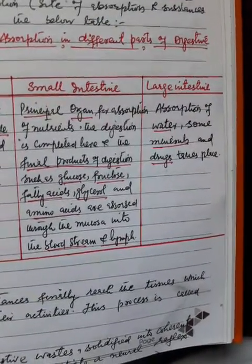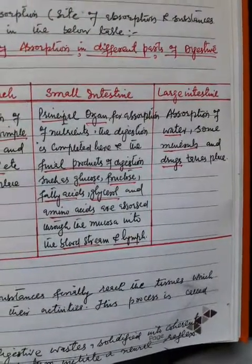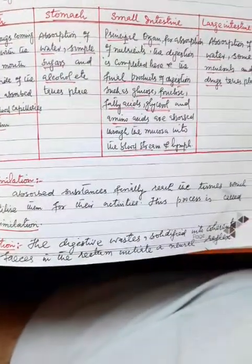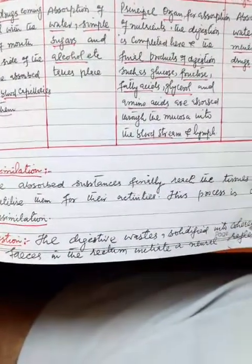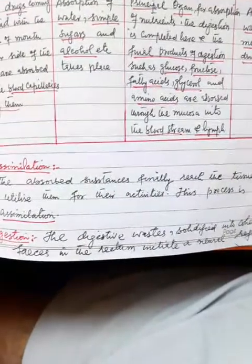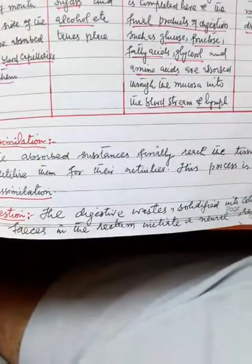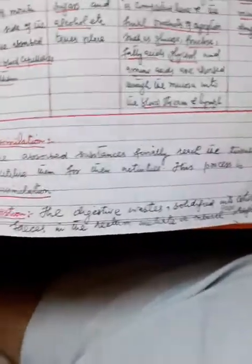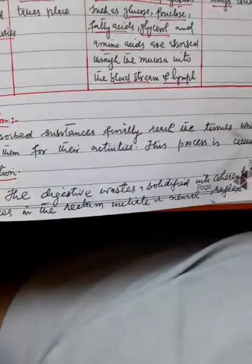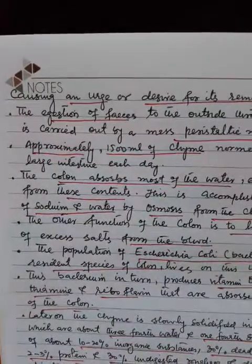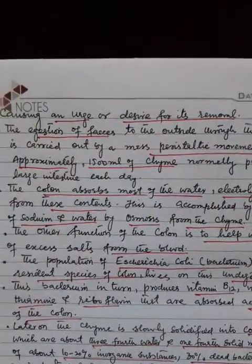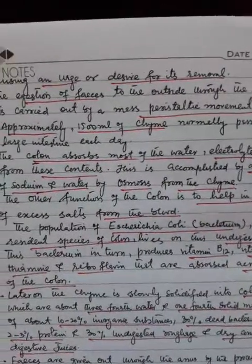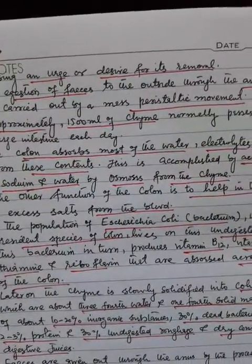In the large intestine, absorption of water, some nutrients, and drugs takes place. The absorbed substances finally reach the tissues, which utilize them for their activities — this process is called assimilation. Digestive wastes solidified into coherent feces in the rectum initiate a neural reflex causing an urge for their removal. The expulsion of feces to the outside through the anal opening is carried out by a mass peristaltic movement.